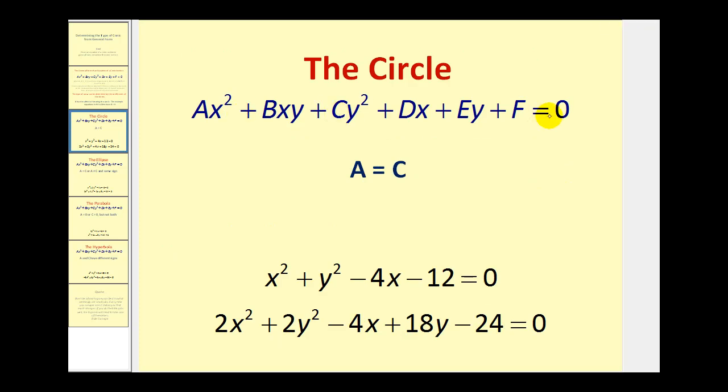If we have a conic in general form and A equals C, or the coefficient of the x squared term equals the coefficient of the y squared term, we will be guaranteed a circle. Notice on this first example we have A equal to one and C equal to one, therefore we have a circle. On the second example we have A equals two and C equals two, therefore we have a circle.